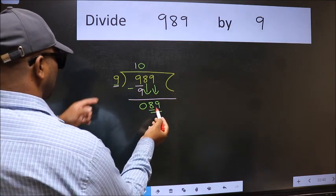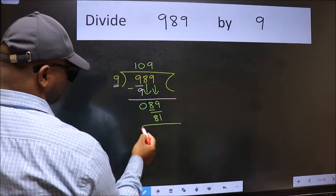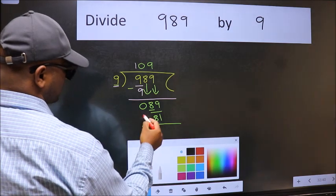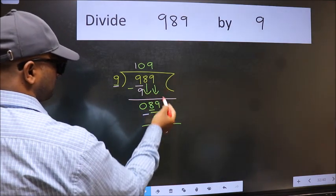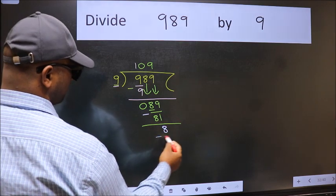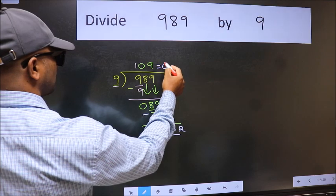A number close to 89 in 9 table is 9 nines 81. Now we should subtract. We get 8. No more numbers to bring it down. So we stop here. This is our remainder and this is our quotient.